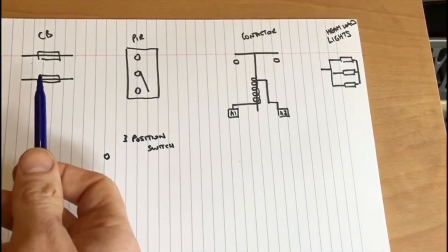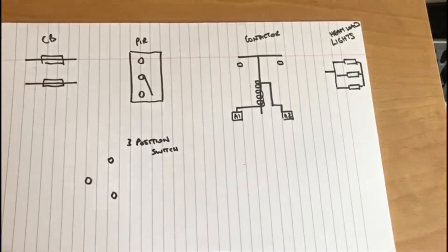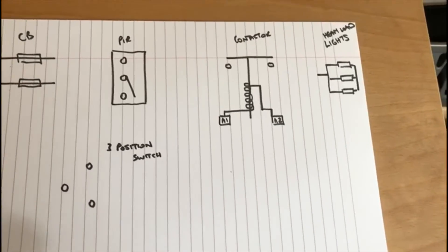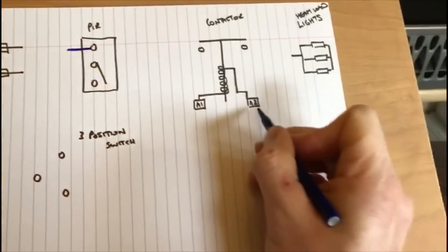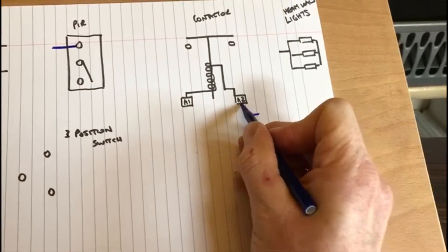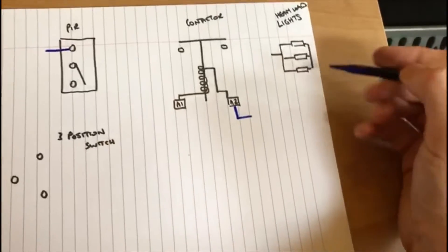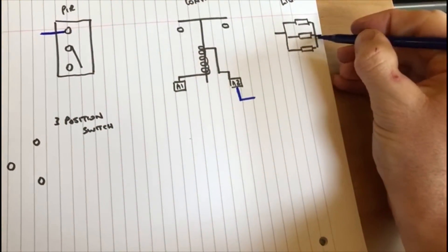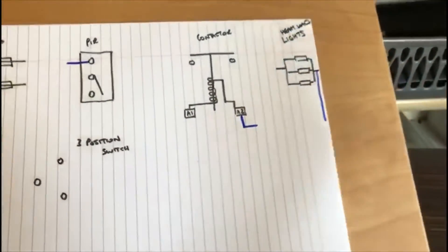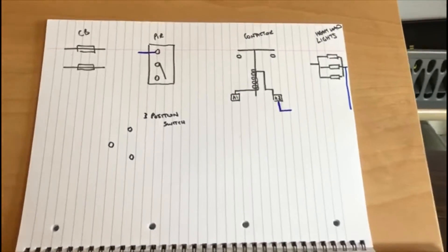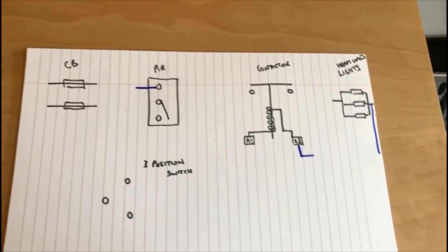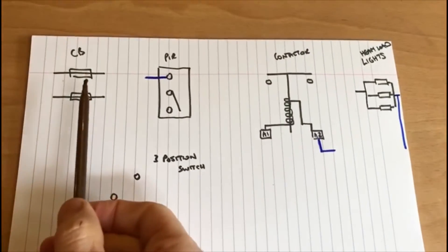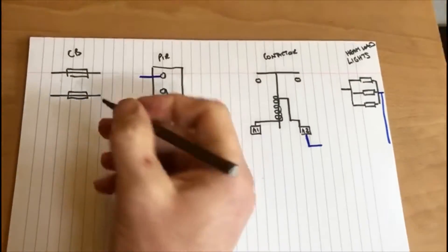We're using two types and two separate circuit breakers. So let's put the neutrals to where they will go - to the PIR, to the contactor, and to the lights. This time though we're using two circuit breakers.